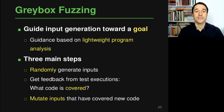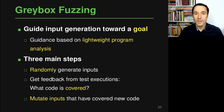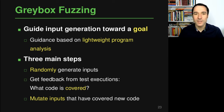Gray box fuzzing is a form of fuzzing where you want to guide the generation of new inputs toward a specific goal. To measure whether you're making progress toward that goal, gray box fuzzing uses some lightweight program analysis that tells you what is happening inside the program. This is used as guidance, and the goal could be, for example, to increase coverage and cover more lines or basic blocks. It's lightweight because it's not analyzing all execution details — it only measures something like coverage with relatively low overhead.